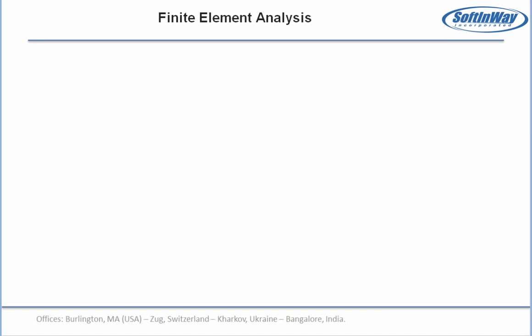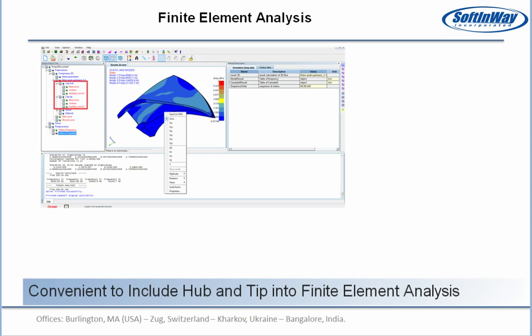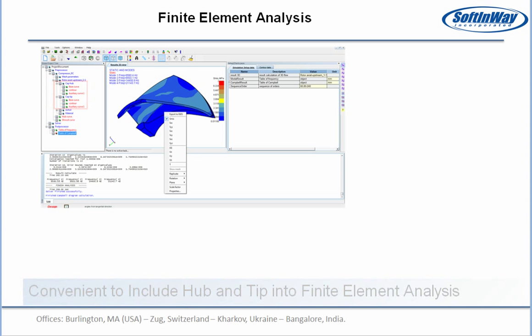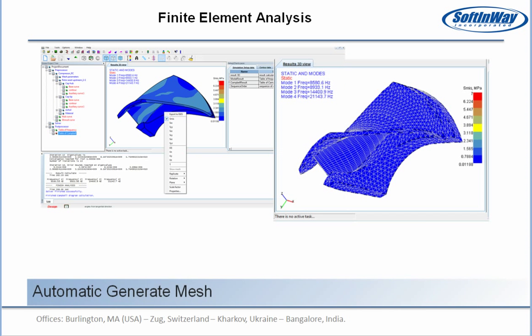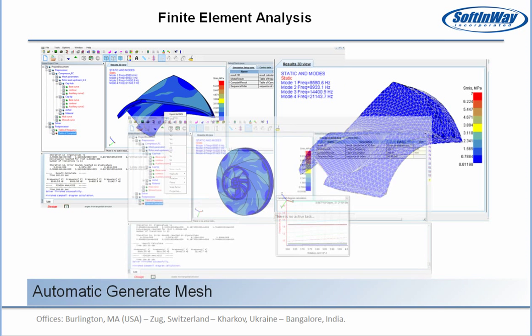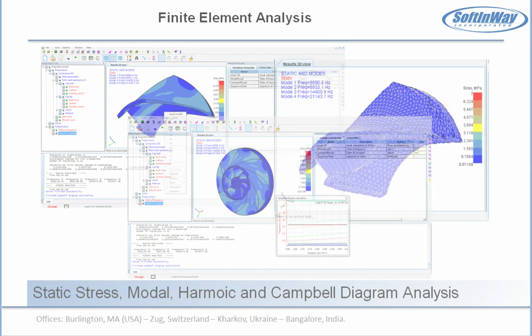When you finish with your blade design, you can check the reliability of the design and assess stress with finite element analysis. There are different types of hubs and tips that can be created. Impeller geometry can be exported into IGS format. The mesh is generated automatically. You can calculate static stress, modal, harmonic, and Campbell diagrams.